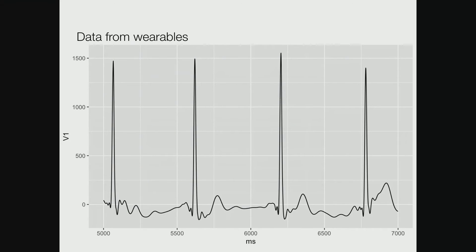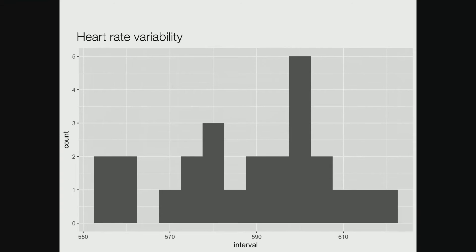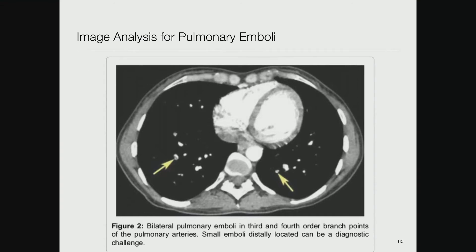This is my heartbeat from my watch. You can download the stuff and put it in your favorite analysis engine. Here I was running across the Harvard Bridge. If you look at my heart rate variability over 30 seconds, the inter-beat interval ranges from about 550 to 630 milliseconds. You could calculate I was running at about 100 beats per minute.